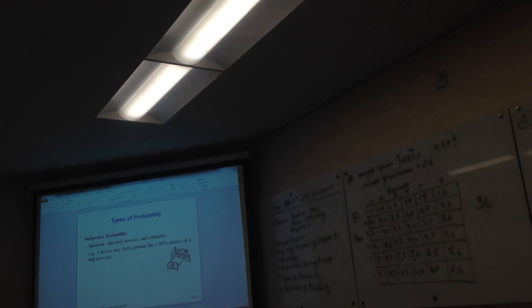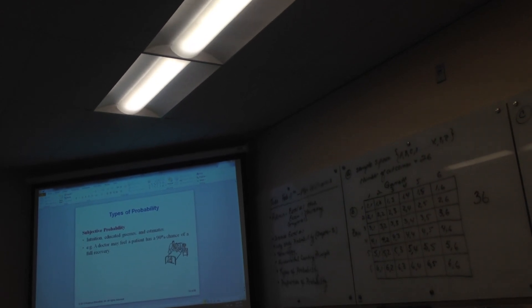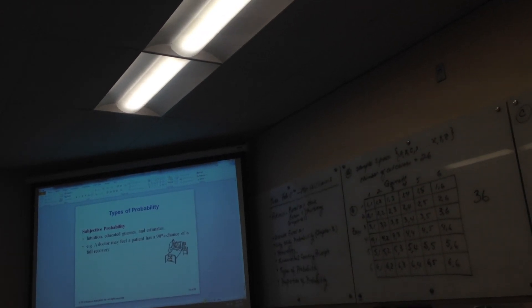All right, let's take a look at a couple of questions and work some problems. Let's take a look at these three problems. Number three: According to a company's records, the probability that a washing machine will need repairs during a six-year period is 0.1 or 10 percent.